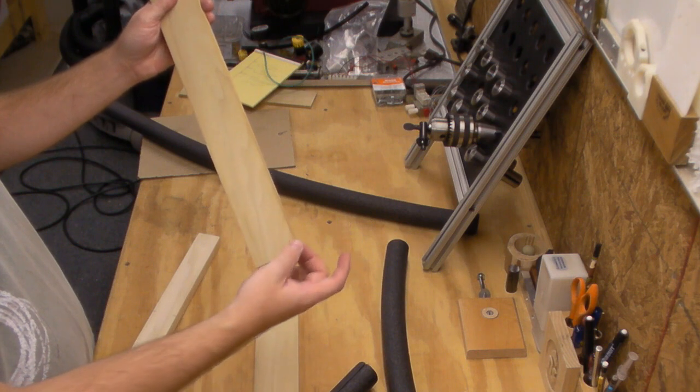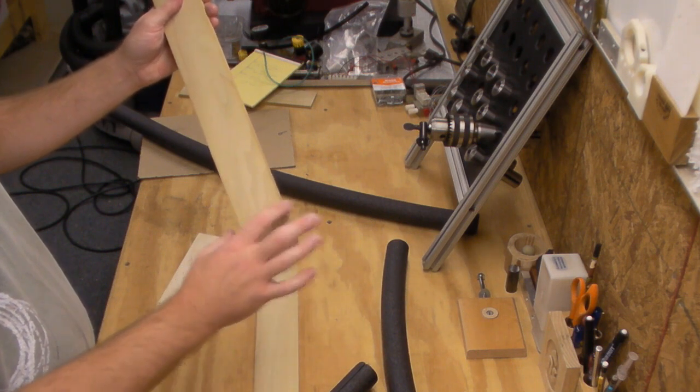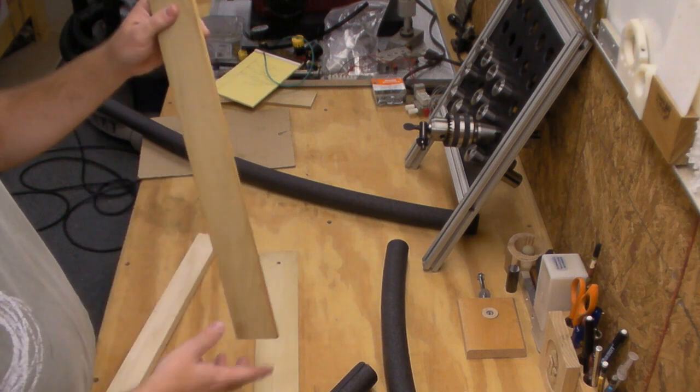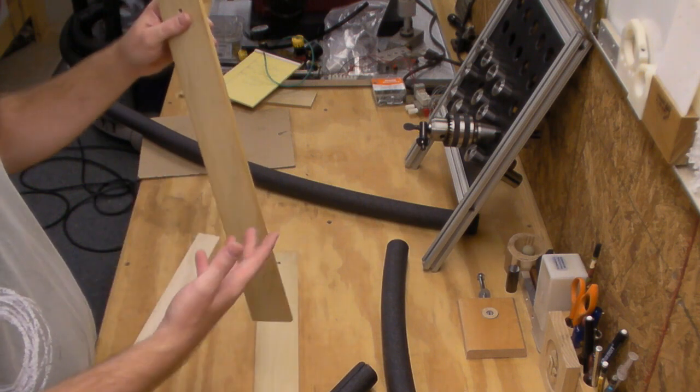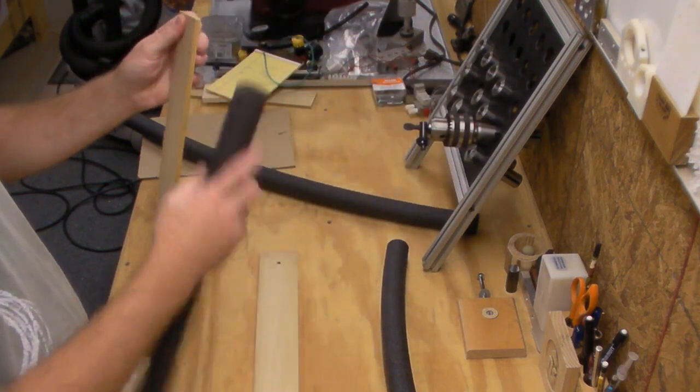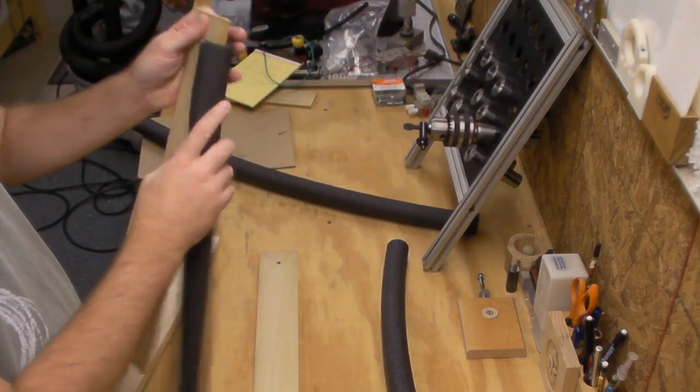One thing that you could probably do is just simply round this corner over, probably both of them. Just go ahead and cut a circle on the end of it. That would help a little bit. But if somebody is in close proximity to this and you've got it automatic, it could come up and hit somebody. So the first thing I thought of, well, this is a good bumper.